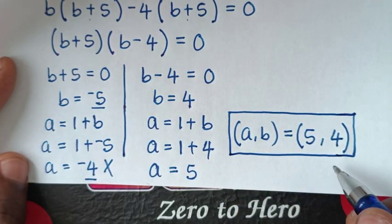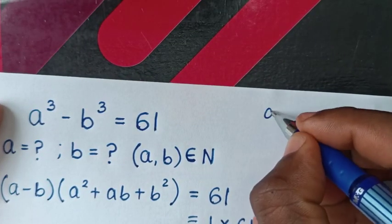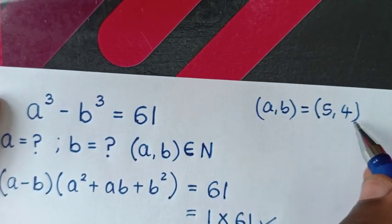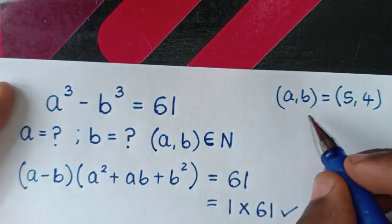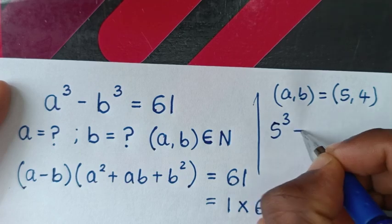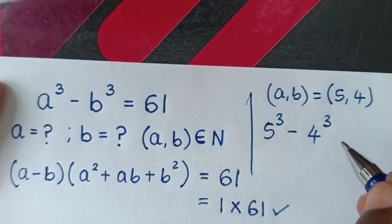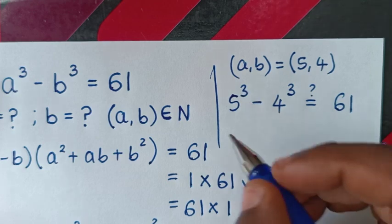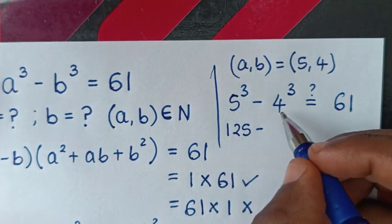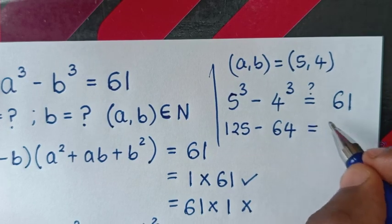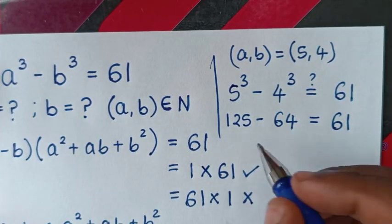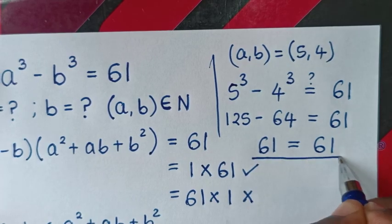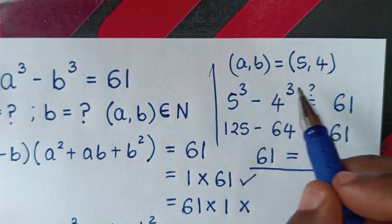Now, let's check this solution to see if it is correct. To check, from (a, b) equal to (5, 4), we substitute these values into the original problem. So it will be 5³ minus 4³, which is 125 minus 64. Is it equal to 61? Yes — 125 minus 64 equals 61. Left side and right side are equal, so it is confirmed true for a = 5, b = 4.